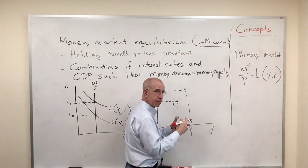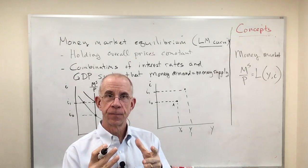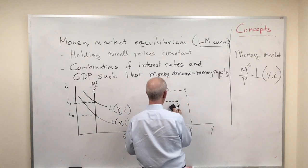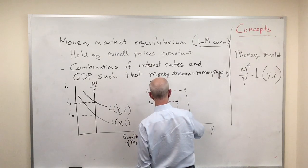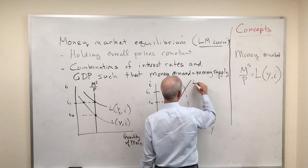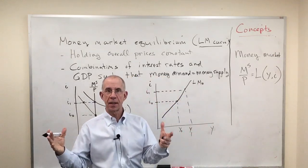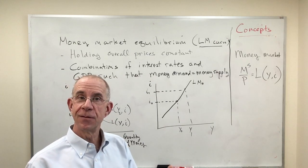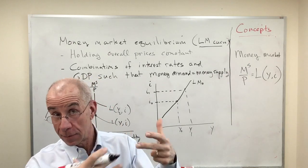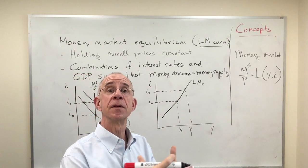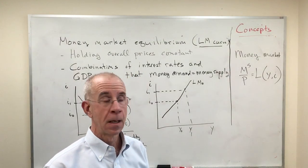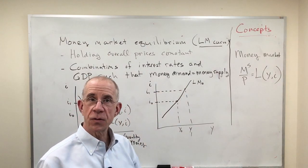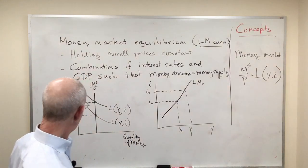So higher interest rates, higher GDP will keep that money market in equilibrium. You've got to have some combination of the two. If you put together all these different combinations of the interest rates and output such that the money market was in equilibrium, it would be this positive relationship. Because as interest rates go up and the demand for money goes down, you need something to compensate for that, for example, an increase in GDP. So there's the LM curve depiction.